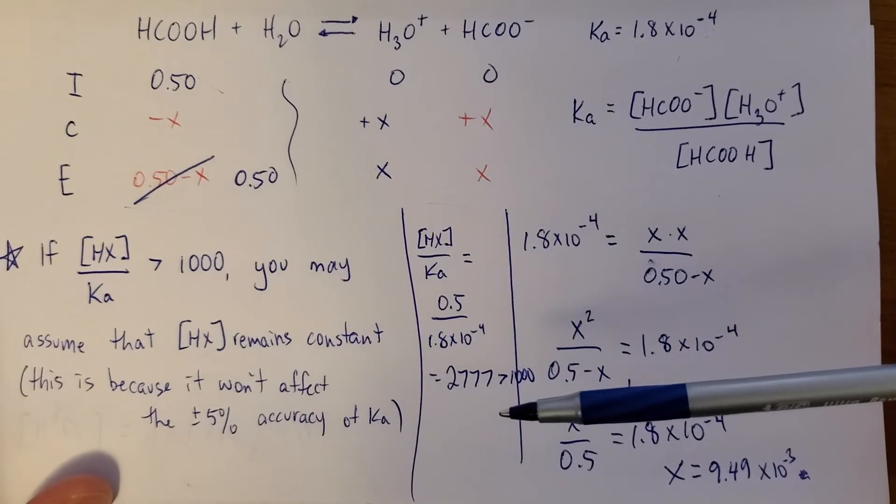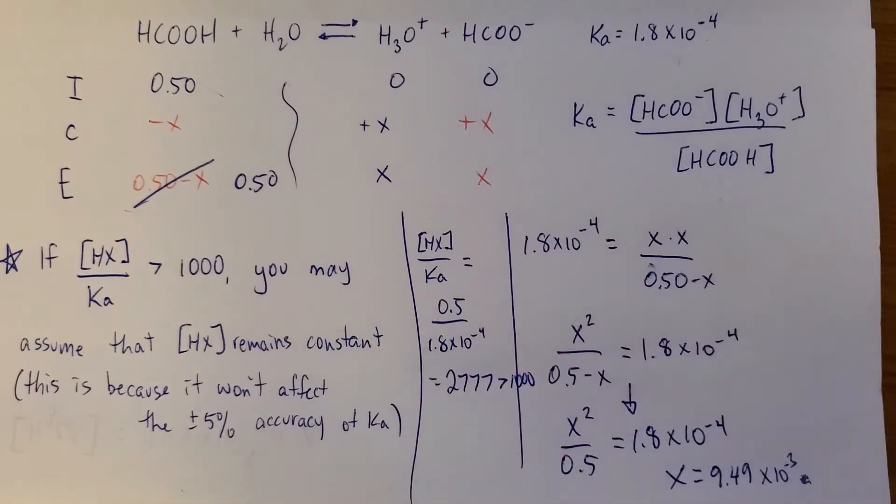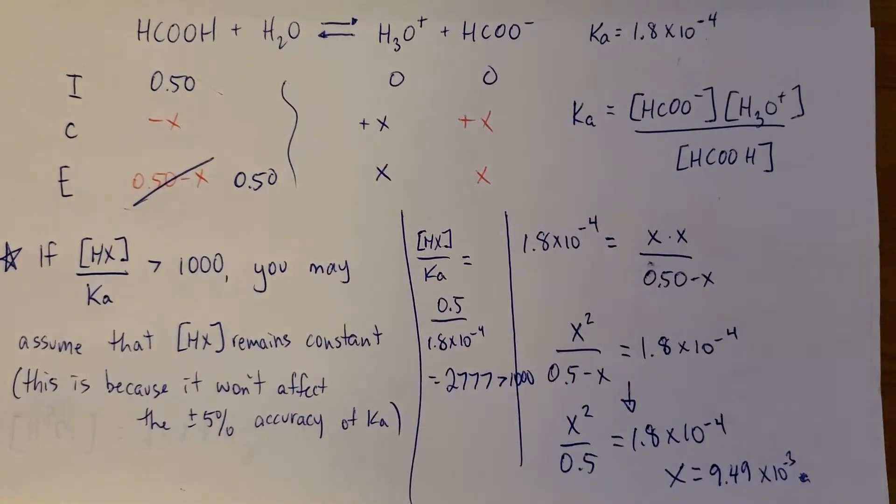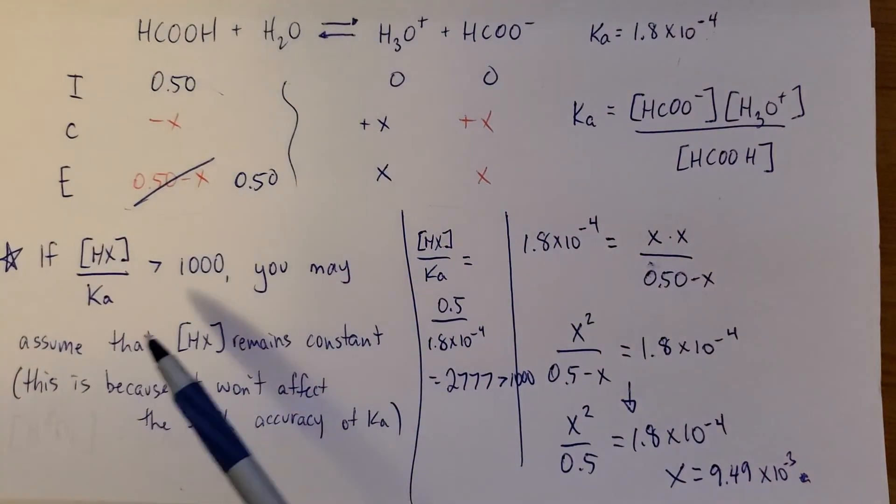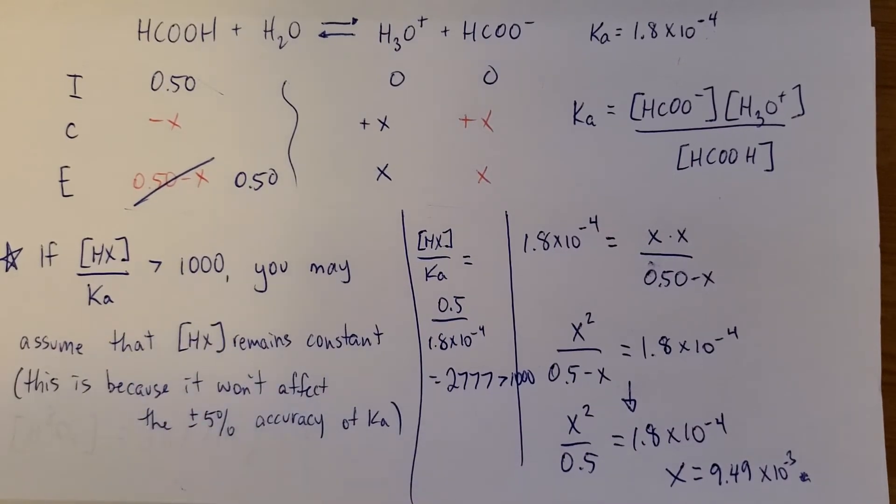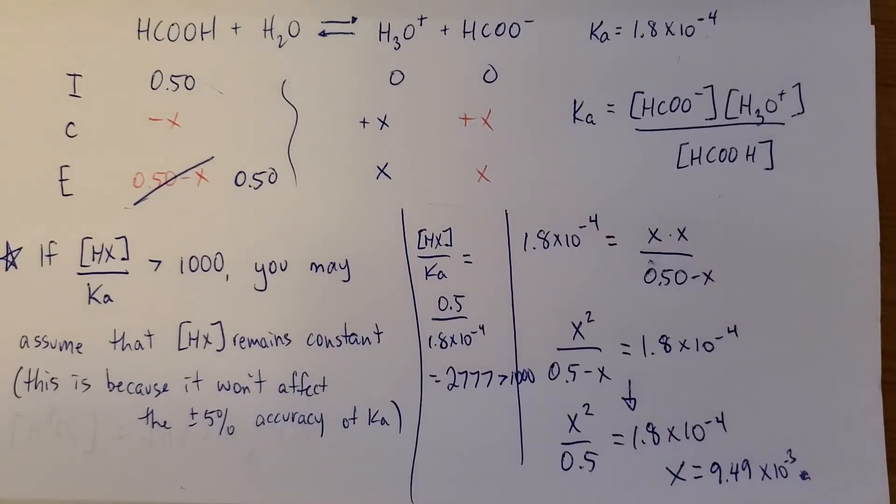The Ka expression ends up being x squared divided by the acid concentration, which we say remains constant because this value is greater than 1,000. So I am going to have questions. You never have to use the quadratic formula, but you do have to determine if this is or is not true. So, I'll have a question where it's one of the options will be you need to use the quadratic. And if you do this calculation, and you get less than 1,000, then you have to use a quadratic.